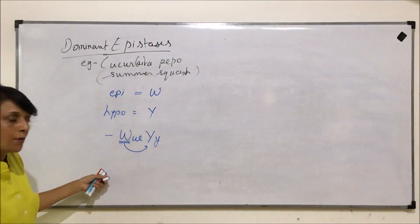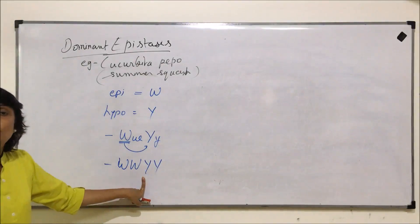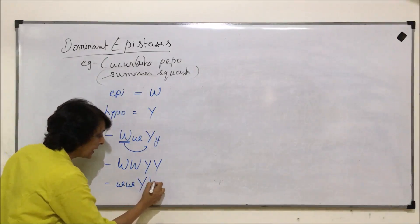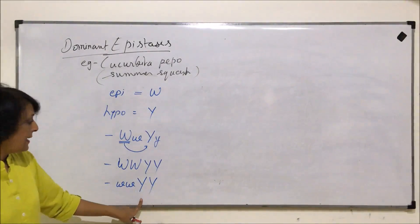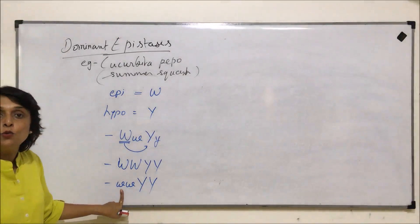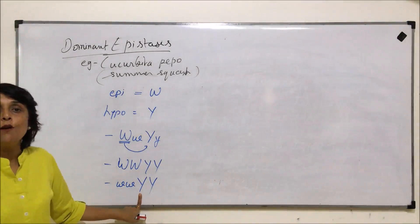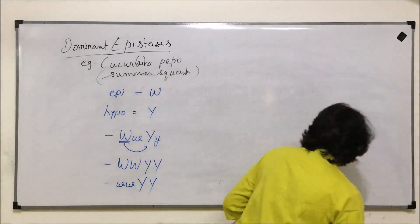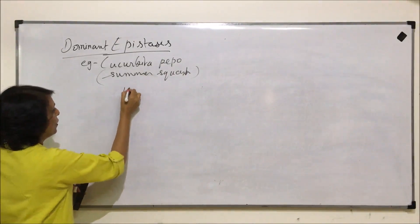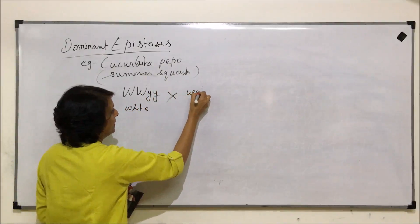If the situation is two capital W's and capital Y's, Y will not be able to express itself. If we have lowercase W's or recessive W's with capital Y's, will Y be able to express itself? The answer is yes, because Y was hypostatic and the epistatic gene was controlling it only in its dominant form. So wherever there is capital W, we will not see Y express itself. Let us take the cross between a white and a yellow flower.